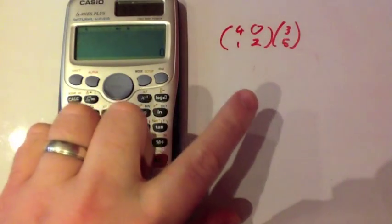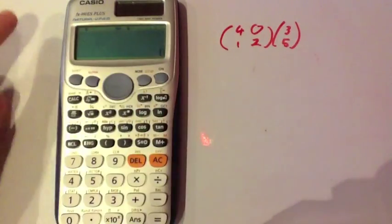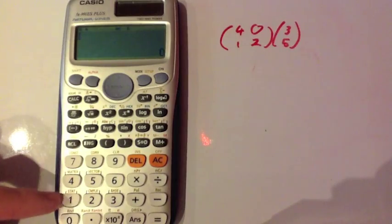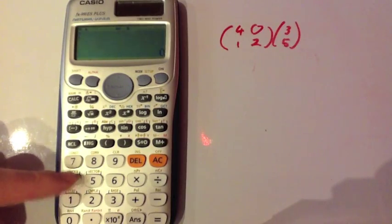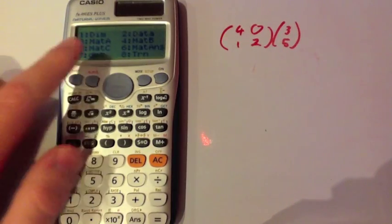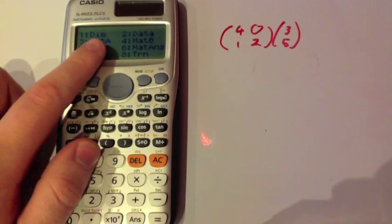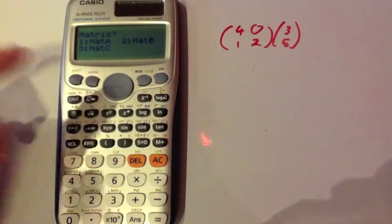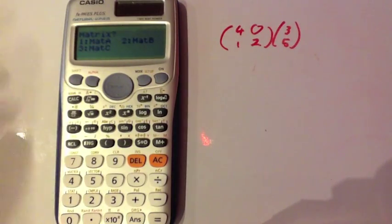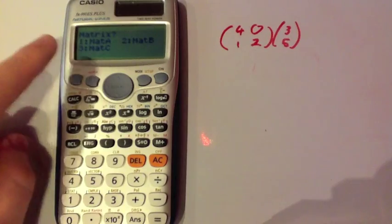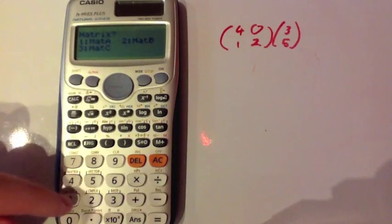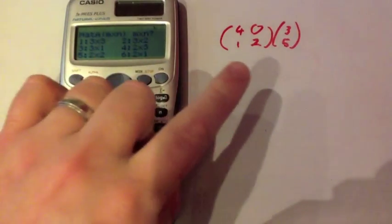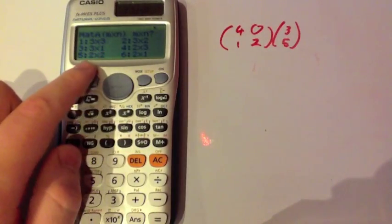Now we're going to input our matrices. To input our first matrix we're going to press shift and you can see above 4 we've got the word matrix. Press 4 and we're going to input data, D-I-M, so press number 1. Then it'll prompt us for which matrix we're going to call it. We can store up to 3 matrices into the calculator. Let's store it as matrix 1, which would be matrix A. Press number 1 and it's a 2x2 matrix, so number 5.